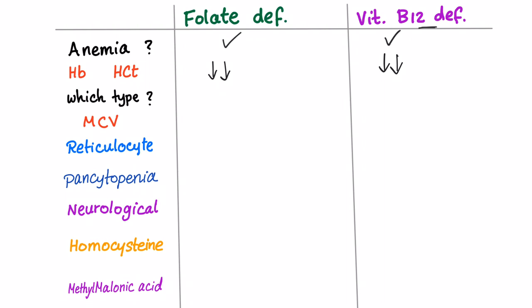Which type of anemia? Macrocytic. Which type of macrocytic? Megaloblastic. So that's both of them. How about the MCV? High. Why? Because it's macrocytic.